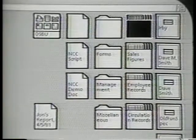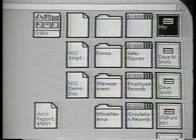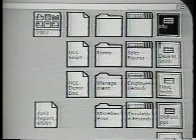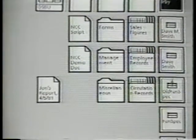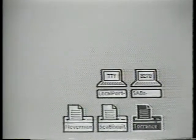Let me select some of the other icons on the desktop. This is a folder, a records file, a file drawer, 3270 and teletype terminals, printers, and in and out mail baskets.